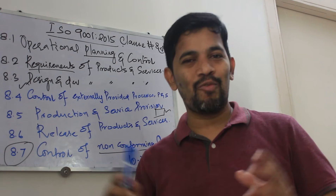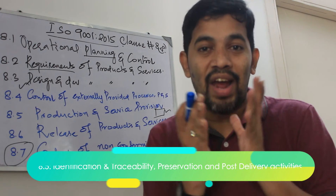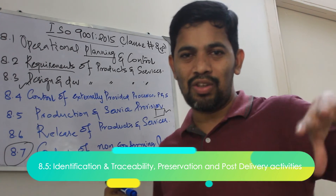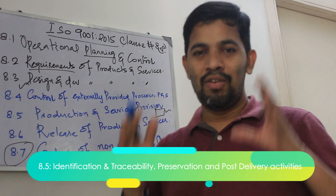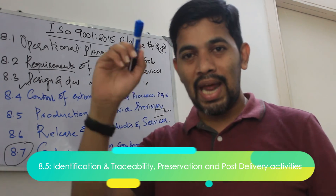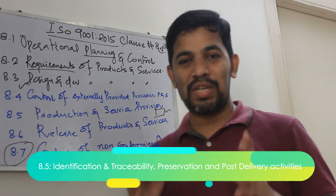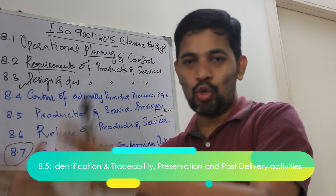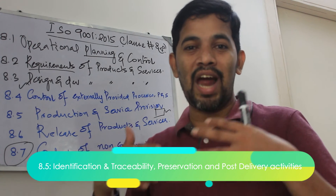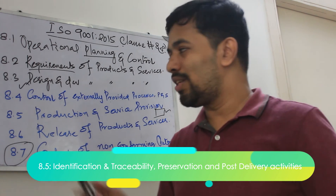8.5 has very interesting subclasses for production. One thing that will happen for sure is we need to have identification and traceability. You also need preservation — for example, if you are storing chemicals, that chemical has to be preserved and should not give any adverse impact or hazard. And then there is post-delivery. These are all the main aspects under class number 8.5.